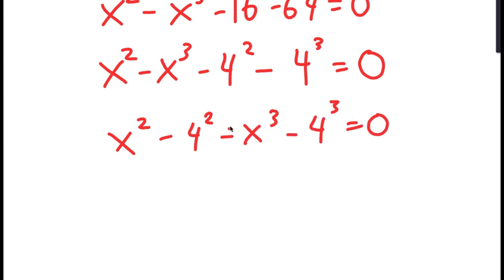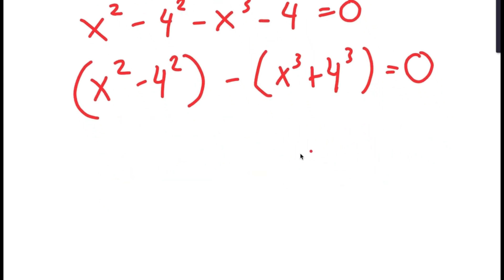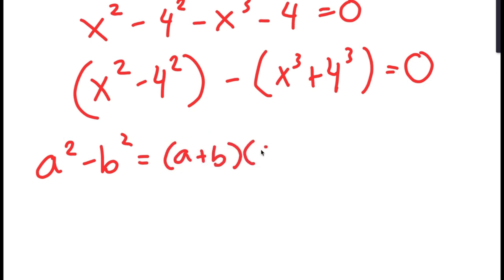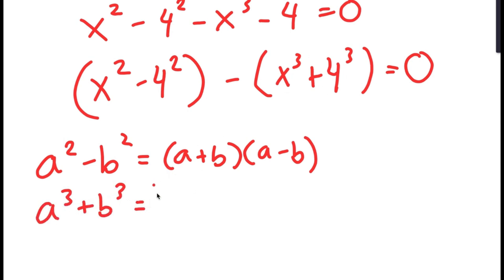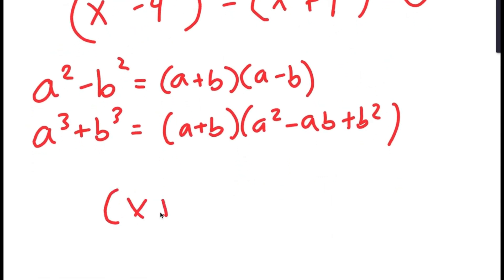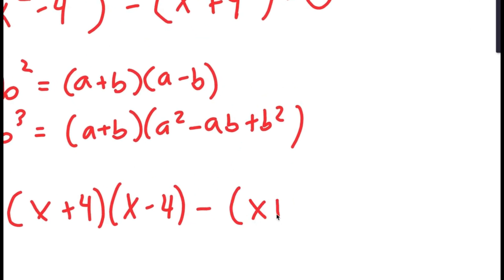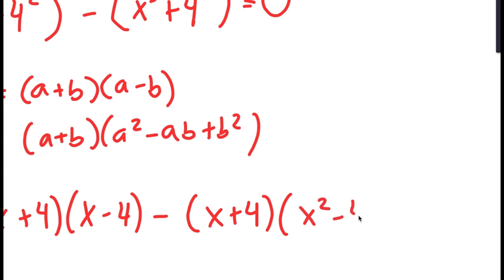There are two properties I'm going to use. I'm going to write this as x squared minus 4 squared, minus x to the power of 3 plus 4 to the power of 3 — we put plus because the negative sign distributes. Using a squared minus b squared equals a plus b times a minus b, and a cubed plus b cubed equals a plus b times a squared minus ab plus b squared, x squared minus 4 squared turns into x plus 4 times x minus 4, and x cubed plus 4 cubed turns into x plus 4 times x squared minus 4x plus 16.